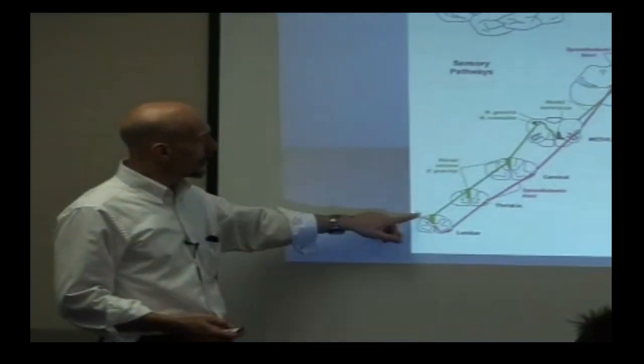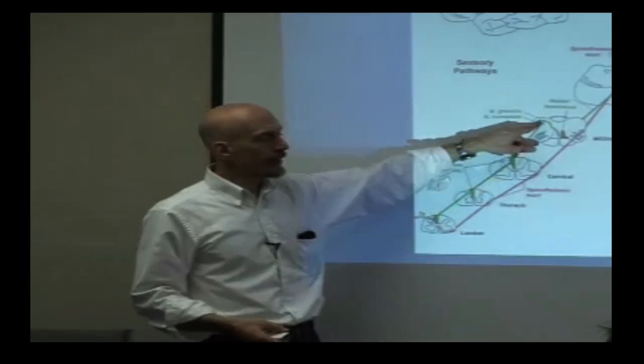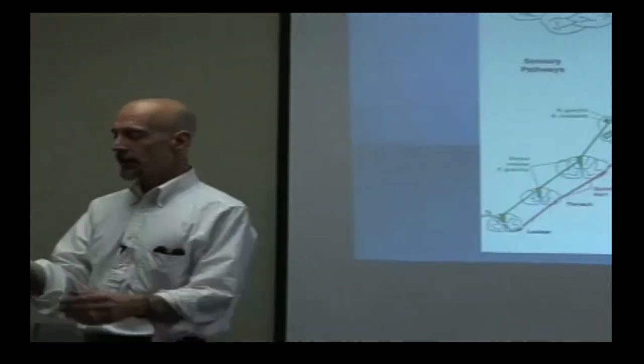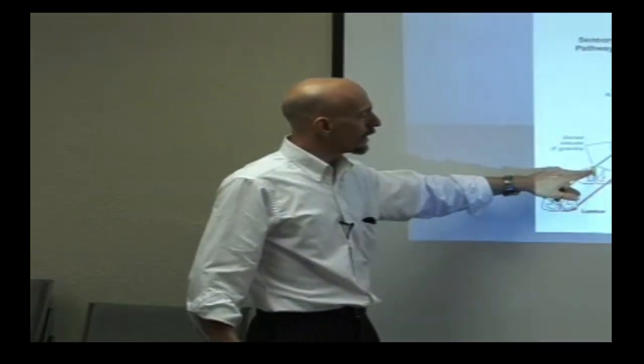Here's some sensory pathways. The dorsal column is basically ipsilateral until it gets to the brainstem. The information comes from the receptor, goes through the peripheral nerve, comes into the dorsal horn of the spinal cord, and travels up.